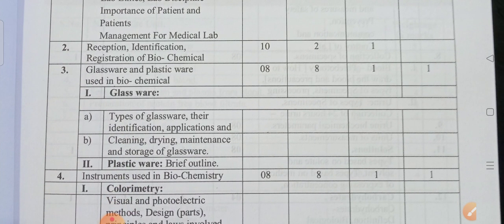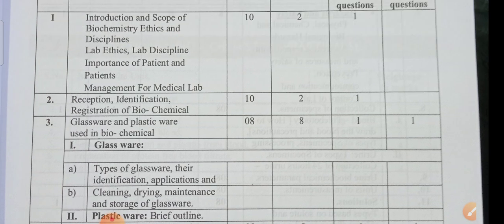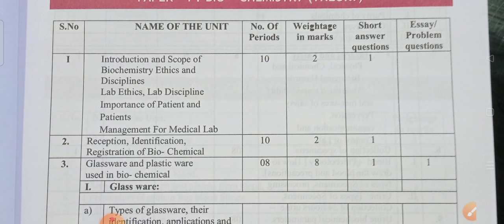The second topic is reception, identification, and registration of biochemical specimens. In this, 2 marks weightage will be there.